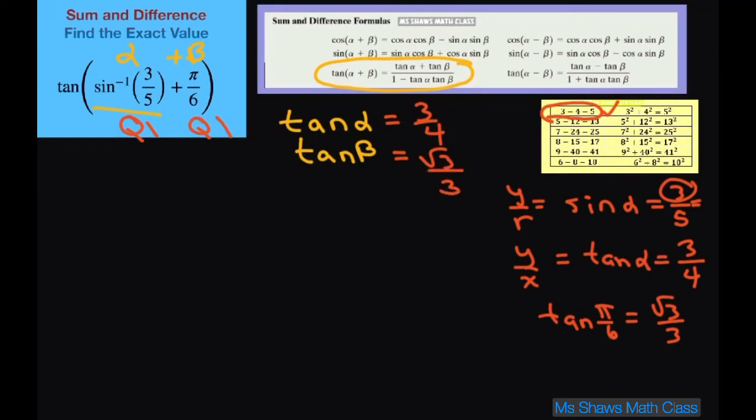So we have, I'm going to write out just this part here. So we have tan of alpha plus tan of beta divided by 1 minus tan of alpha times tan of beta.